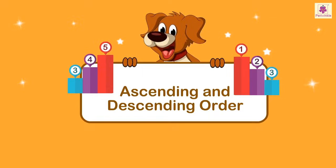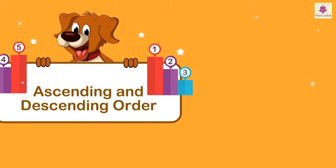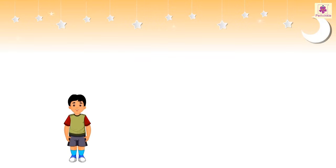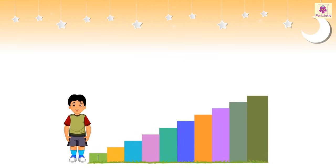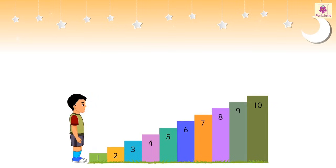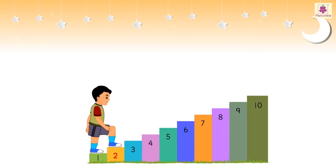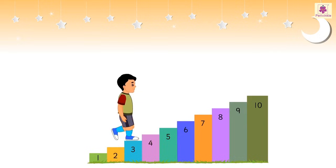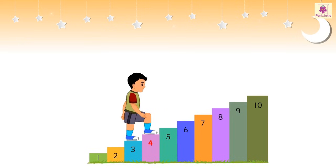Ascending and descending order. Let us meet Rahul — he has to climb 10 steps which are numbered 1 to 10. Rahul starts from step number 1 and climbs onto step number 2, then to step number 3, 4, 5.